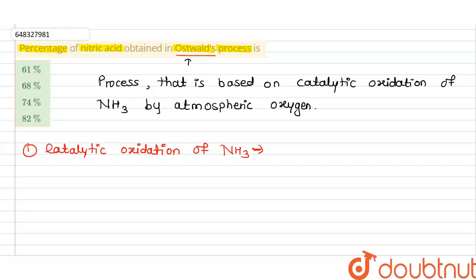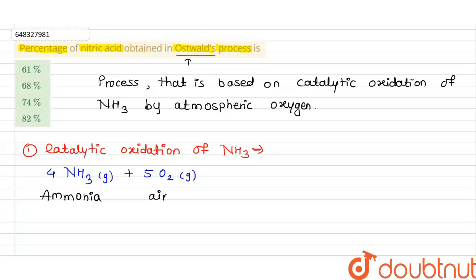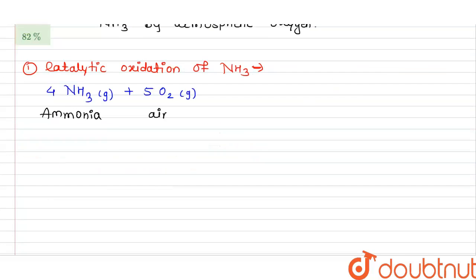In this first step, we have a mixture where four molecules of ammonia (NH3) in gaseous form are combined with oxygen from the air, because the oxidation is done by atmospheric oxygen.